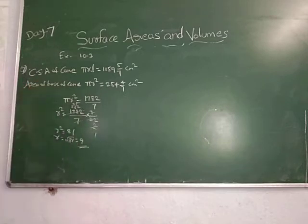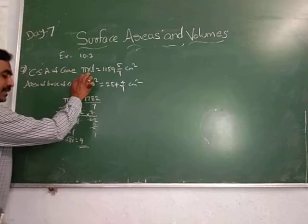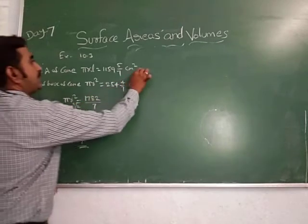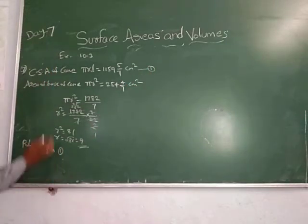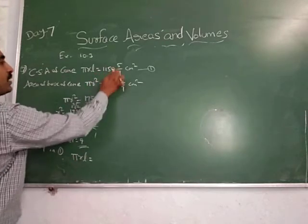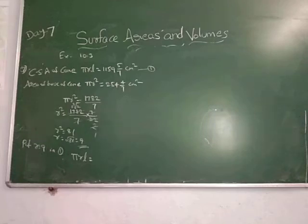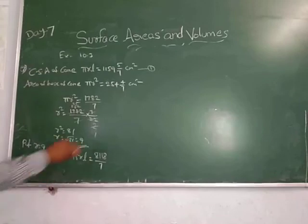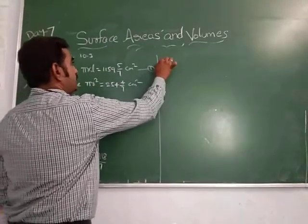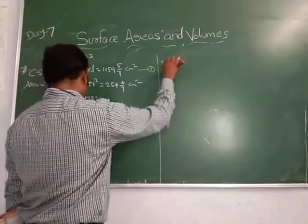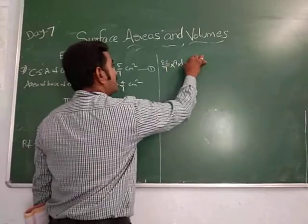What we have to find: the volume. We need to know L, R, and H values. By substituting R equals 9 in equation 1, pi R L equals 1159 and 5 by 7, that is 8118 by 7. So L equals 8118 by 7 divided by 22 by 7 into 9. After cancellation, L equals 41.